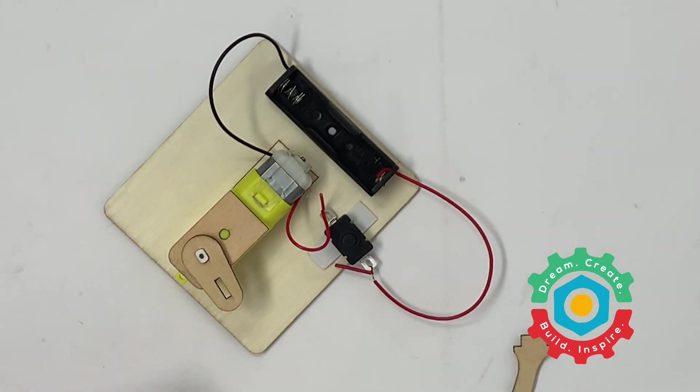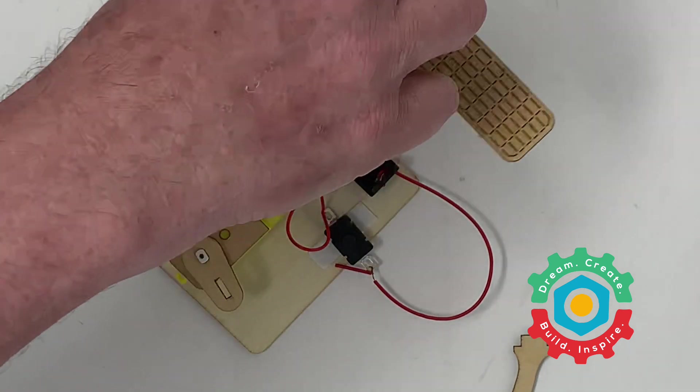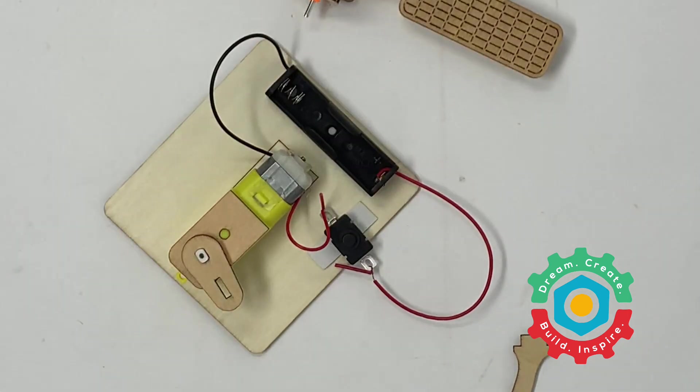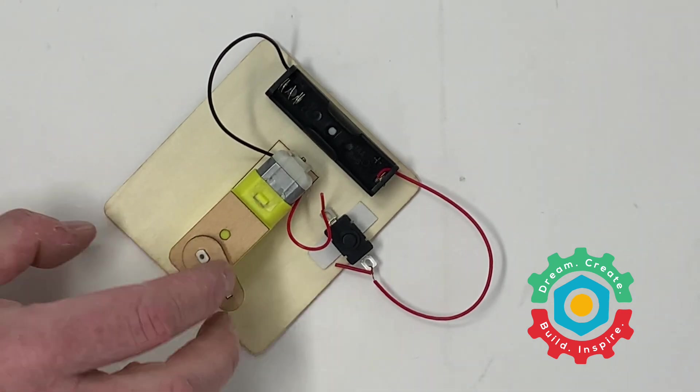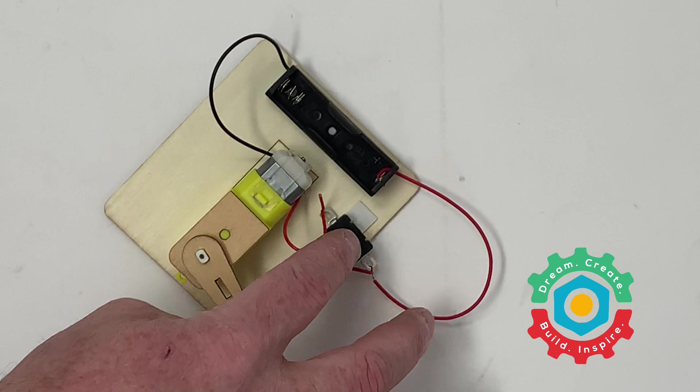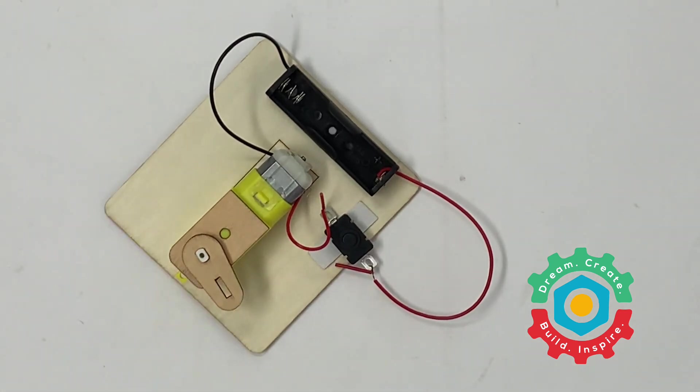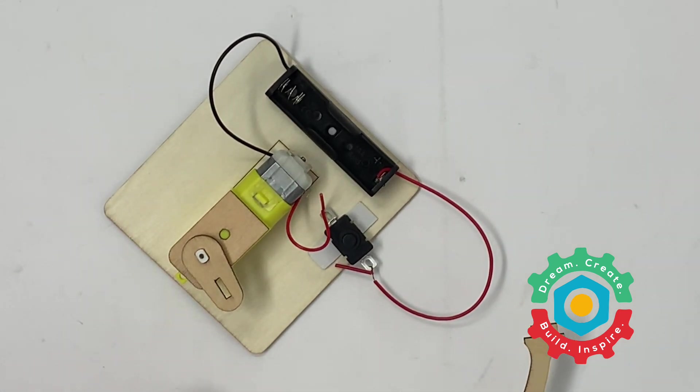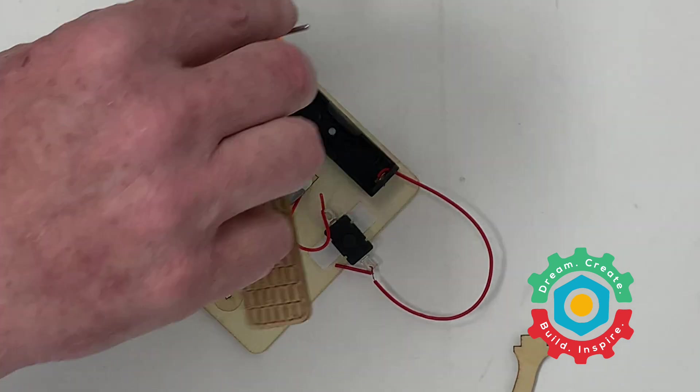Now we're going to take this piece and we're going to attach it to the main body. So we have secured our motor, our power source, and our switch to the base. Now we're going to take this piece and we're going to attach it to the main body.